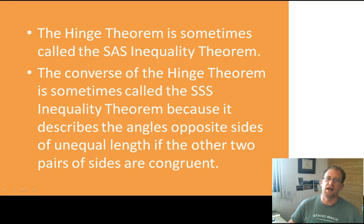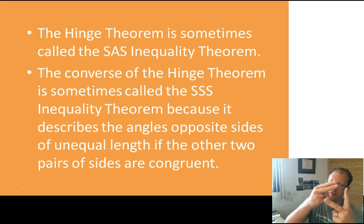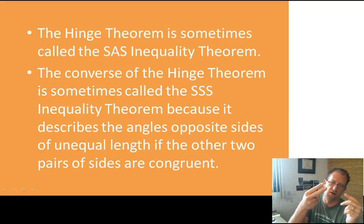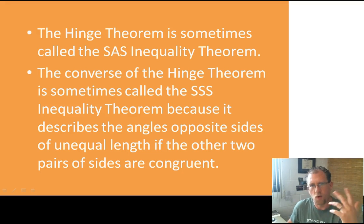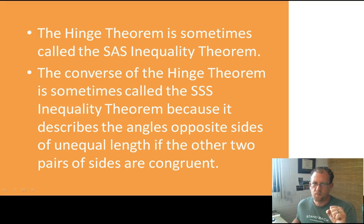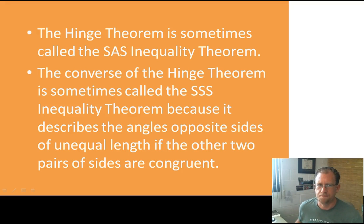Another way of looking at this: the converse of the hinge theorem is sometimes called the side-side-side inequality theorem, because it describes the angles opposite sides when the other two pairs of sides are congruent. So again — hey, look, these two are congruent to these two, but the third side here is bigger than the third side here, so if it's a bigger side, it must be a bigger angle than the smaller side and the smaller angle. You can look at it not as analyzing the angle to draw conclusions about the sides, but also analyzing the sides to draw conclusions about the angles.